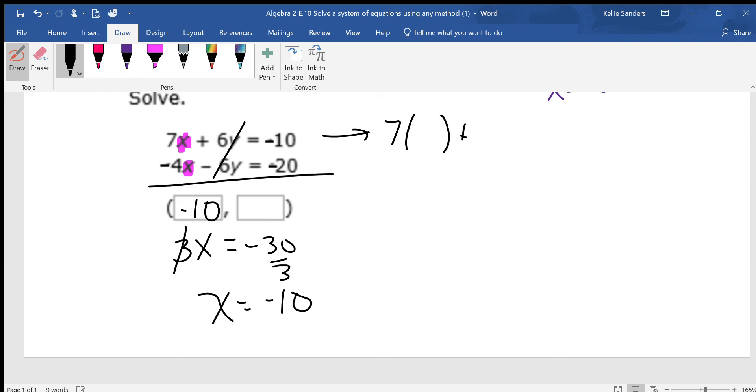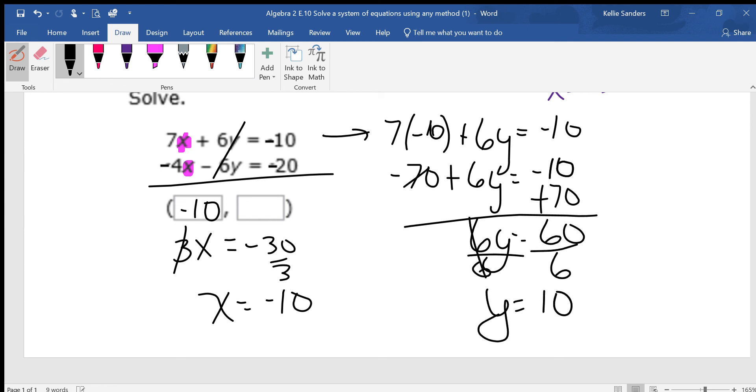7 times x plus 6y equals negative 10. What's this? Negative 10. So 7 times negative 10 is negative 70. Plus 6y equals negative 10. Plus the 70. 6y equals 60. Divide by 6. And y equals positive 10.